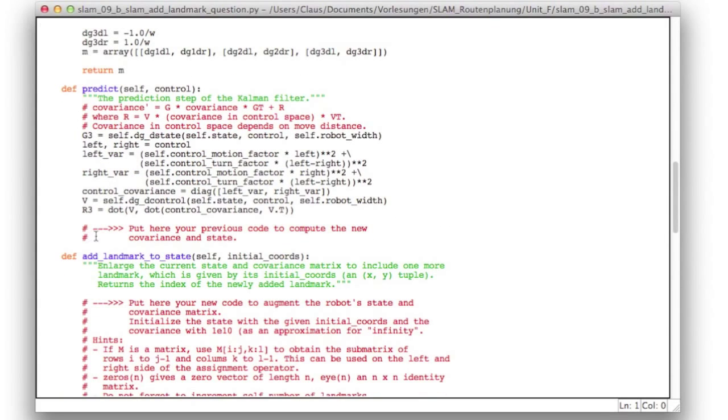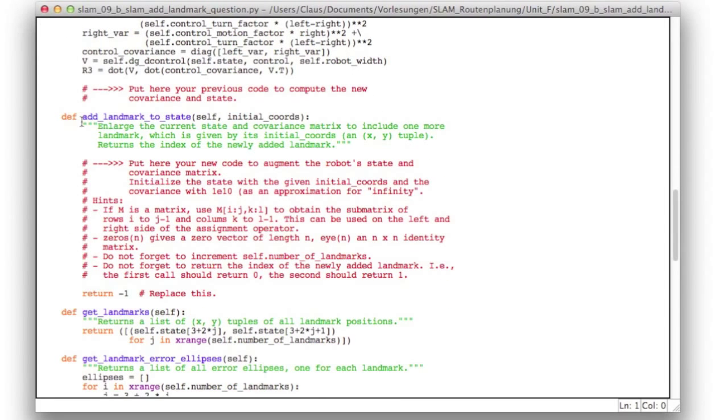So you may want to put your previous code for the prediction down here. And here is the new member function you'll have to implement. So all it gets are the x, y coordinates of the new landmark.